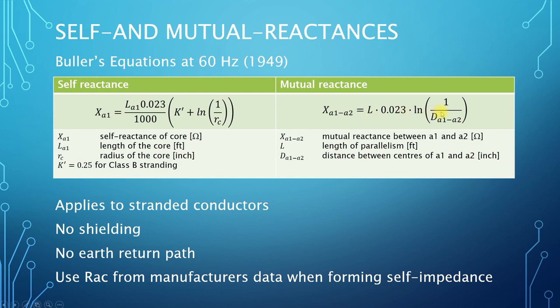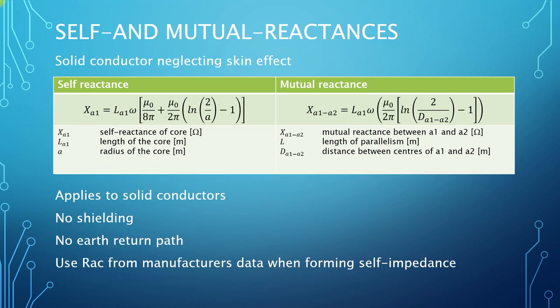The K-dash term effectively takes account of the internal inductance of the conductor — that associated with the magnetic field internal to the conductor — while the logarithm term is associated with the magnetic field external to the conductor. The mutual reactance is calculated in a similar way, and the key issue here is the distance between the conductors: the larger the distance, the smaller the mutual reactance. An alternative formulation is to consider the conductors as solid conductors and, if we neglect skin effect, the following equations can be derived.